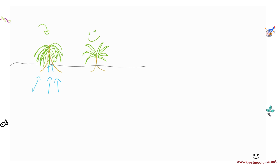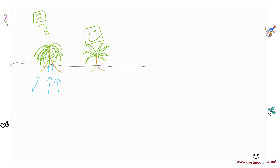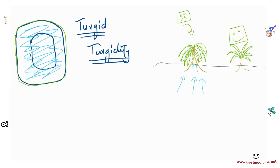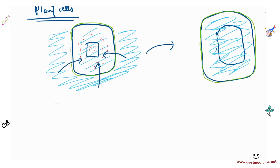When a plant is turgid it is healthy and upright; when it is dehydrated it is sad and drooping.